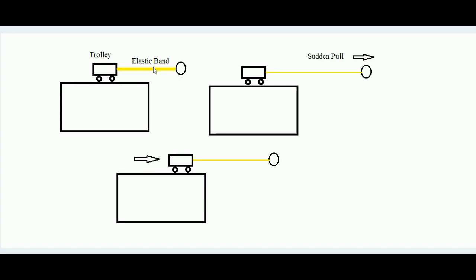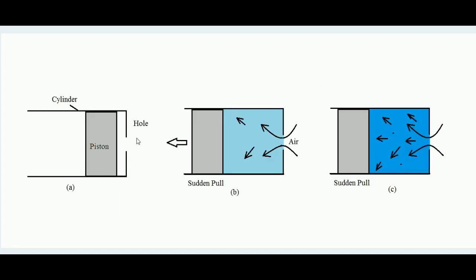Pull this elastic band suddenly — put your finger inside the ring and give a sudden pull. What you will find is that initially the elastic band expands and then the trolley starts moving afterward. The elastic band is pulled fast, but the trolley doesn't move with the same speed. First the elastic band expands, then due to that expansion the trolley is pulled — so the trolley's movement comes late. The movements are not synchronized because the elastic band is expandable.